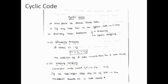If any code satisfies both these properties, then that code is said to be a cyclic code. First we will look at the linearity property. Consider codes Ci and Cj. The addition of these two codes Ci and Cj should give an output that is also a code word. That is the first condition — the addition of two code words must also be a code word.